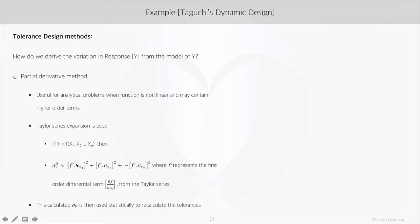If you are interested in understanding how this equation is derived, check out the short video on Taylor series — the link is provided in the description. Once we calculate this model variance, or sigma y, it is then used statistically to recalculate the tolerances for x's.